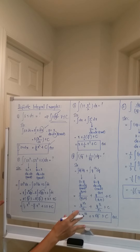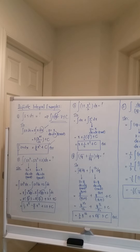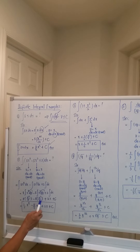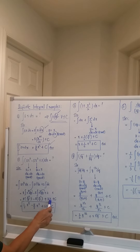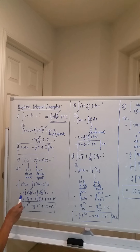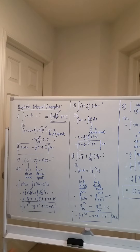Applying the power formula: 8 times x raised to 4+1 which is 5, over 5; minus 5 times x raised to 2+1 which is 3, over 3; plus 2 times the integral of dx, which is simply x plus C. Simplifying: the first term is 8/5 x⁵, the second term is 5/3 x³, giving us 8/5 x⁵ minus 5/3 x³ plus 2x plus C as the answer.